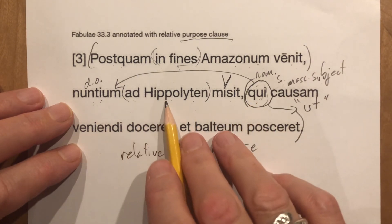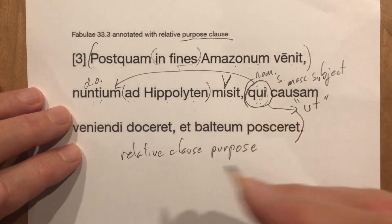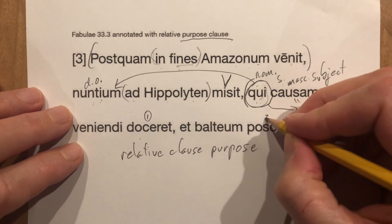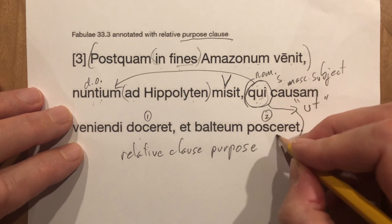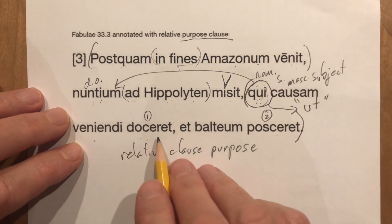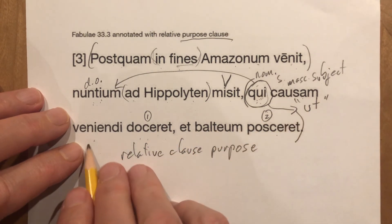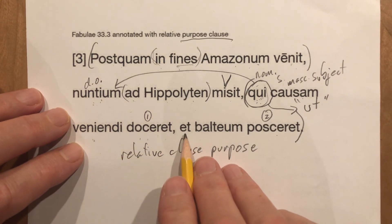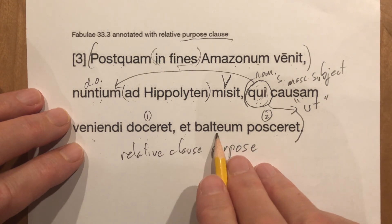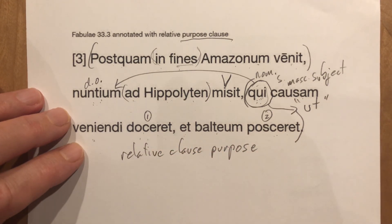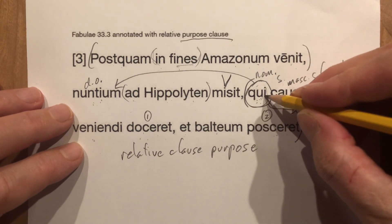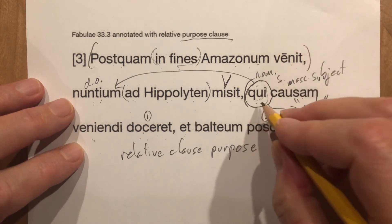Send a messenger to Hippolyta — to, and then we have two imperfect subjunctives: doceret causam veniendi, to learn the reason of his coming, and number two, et balteum posceret, and to ask for the belt. Two imperfect subjunctives in this relative clause of purpose. It's just as though qui were an ut, but instead you get the relative pronoun.